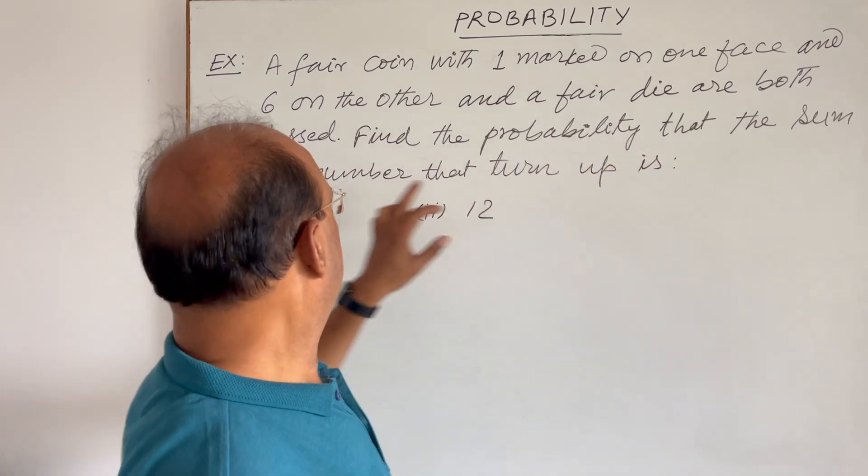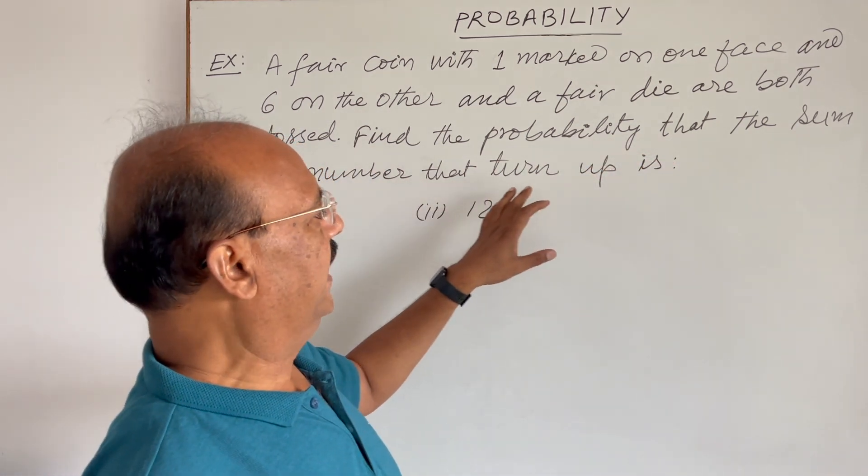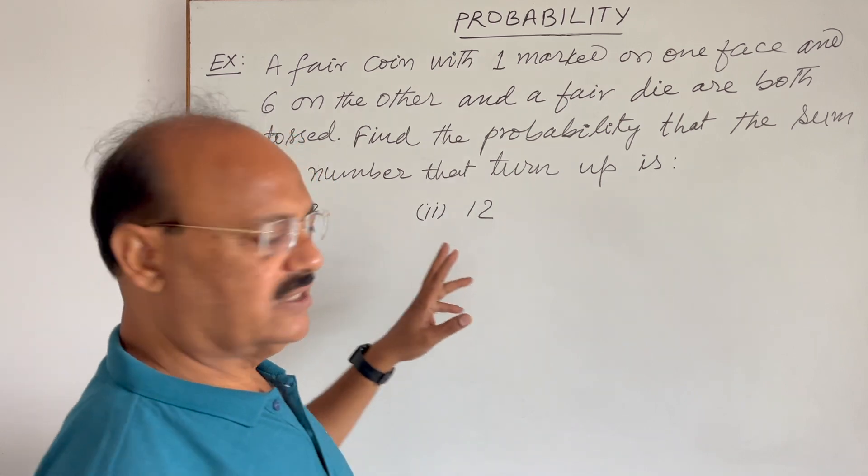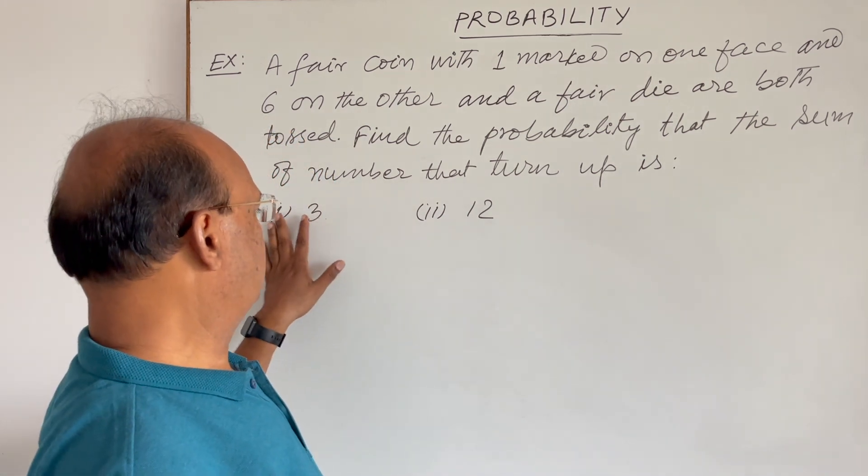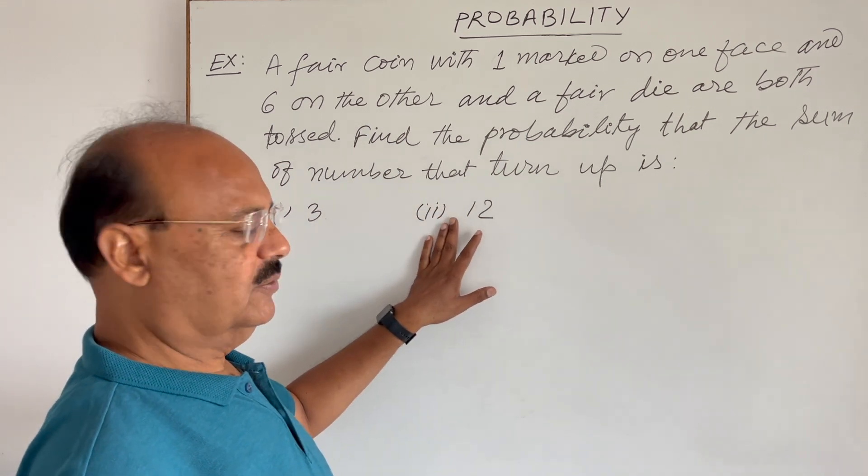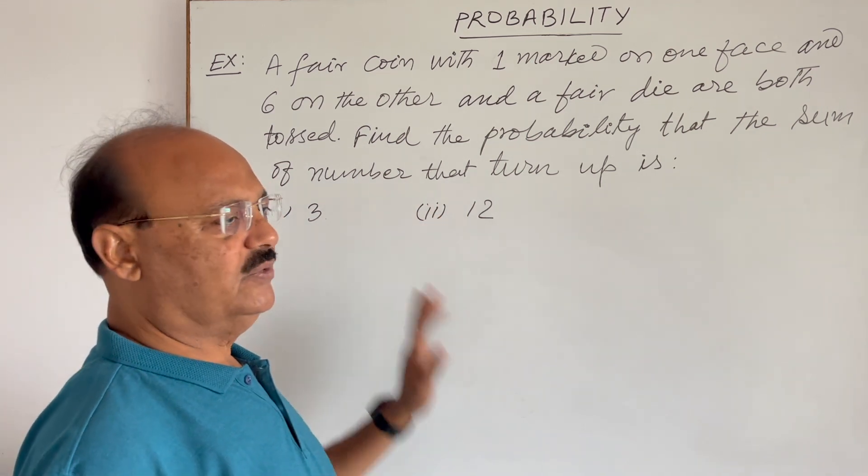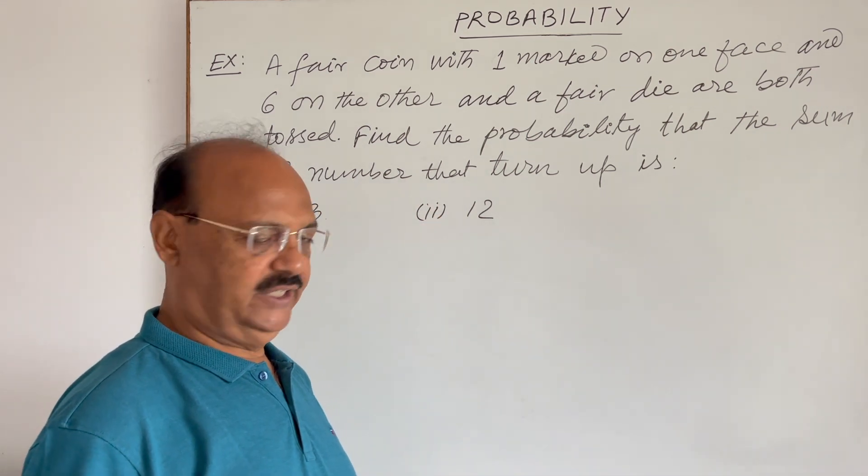Find the probability that the sum of numbers that turn up is, two cases, two parts of the question are here. Sum of numbers is first part three, second part twelve. In both the cases, we have to find out the probability.